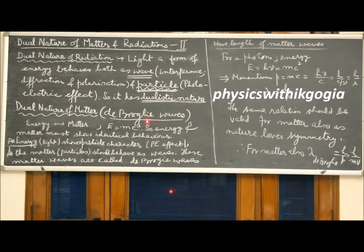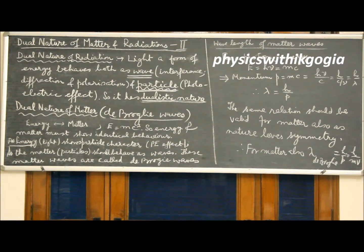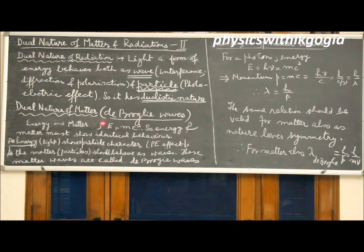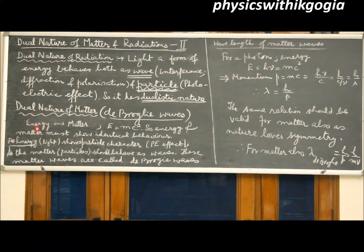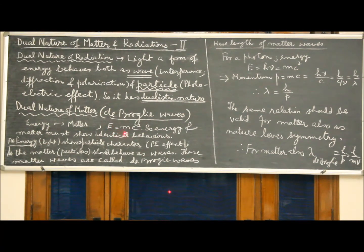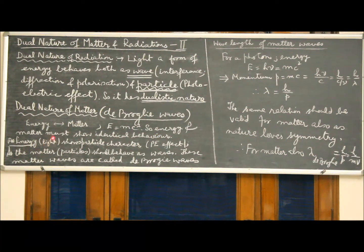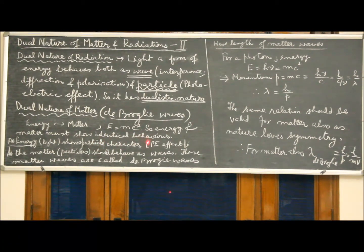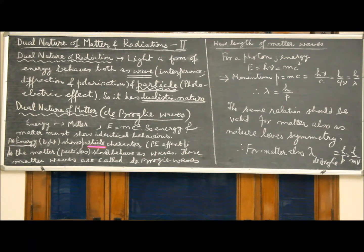Now de Broglie put forward a hypothesis of dual nature of matter or matter waves. He hypothesized that energy and matter are interconvertible. Energy can be changed to matter and matter can be changed to energy. The two are related by Einstein's equation E is equal to mc squared. So energy and matter must show identical behavior. As energy, that is light, shows double character, particle character as well as wave character, de Broglie suggested that particles should also behave as waves. The waves associated with particles or matter were called de Broglie waves.